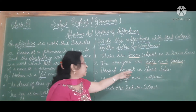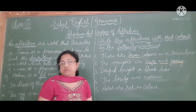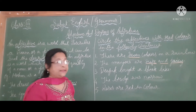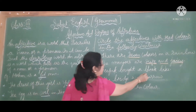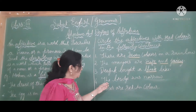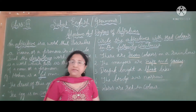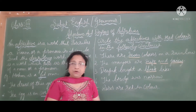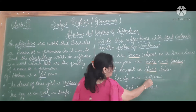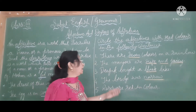Deepak bought a black pipe. Deepak bought a pipe — what color is it? It is black in color. So black is an adjective here. The fourth sentence: the bridge was narrow. How was the bridge — was it broad or narrow? It was narrow. Narrow is an adjective; it is describing more about the bridge.